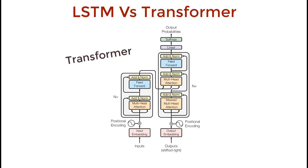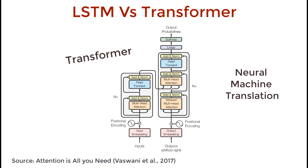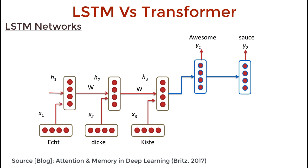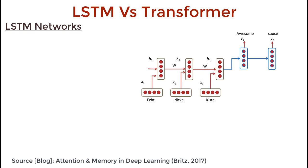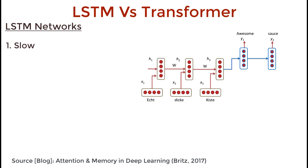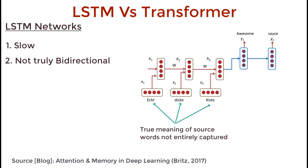This is the Transformer neural network architecture that was initially created to solve the problem of language translation. This was very well received. Until this point, LSTM networks had been used to solve this problem, but they had a few problems themselves. LSTM networks are slow to train. Words are passed in sequentially and generated sequentially, and it can take a significant number of time steps for the neural net to learn. It's not really the best at capturing the true meaning of words.